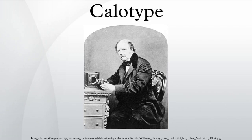Callotype, or Talbotype, is an early photographic process introduced in 1841 by William Henry Fox Talbot, using paper coated with silver iodide. The term Callotype comes from the Greek words for 'beautiful' and 'impression.'